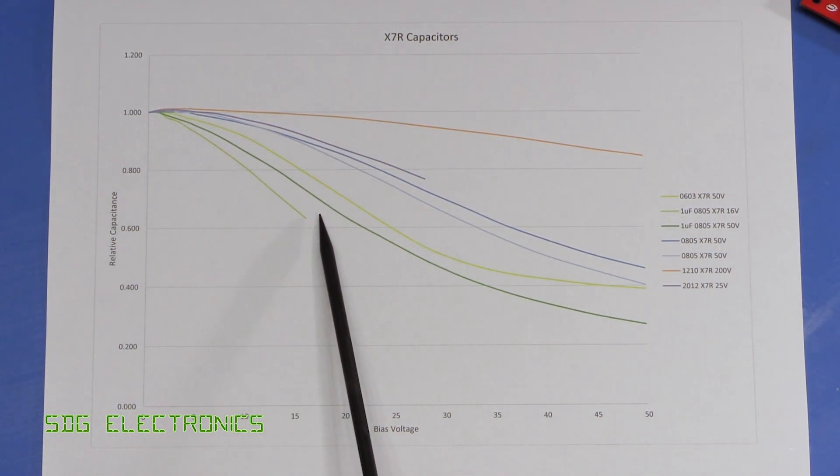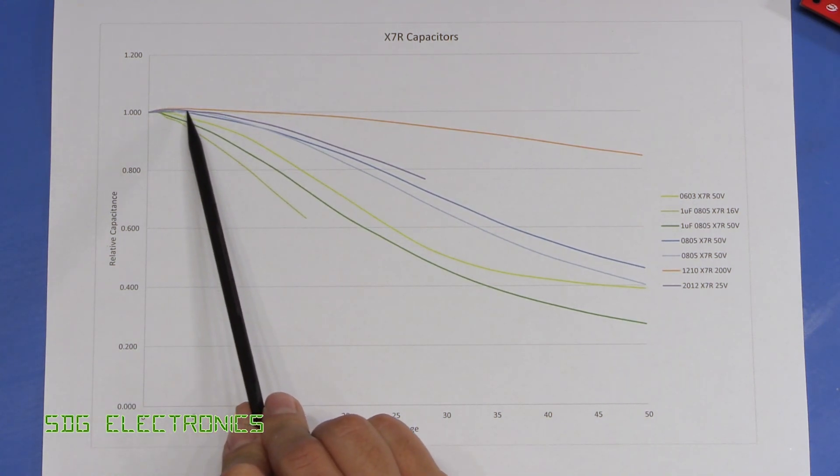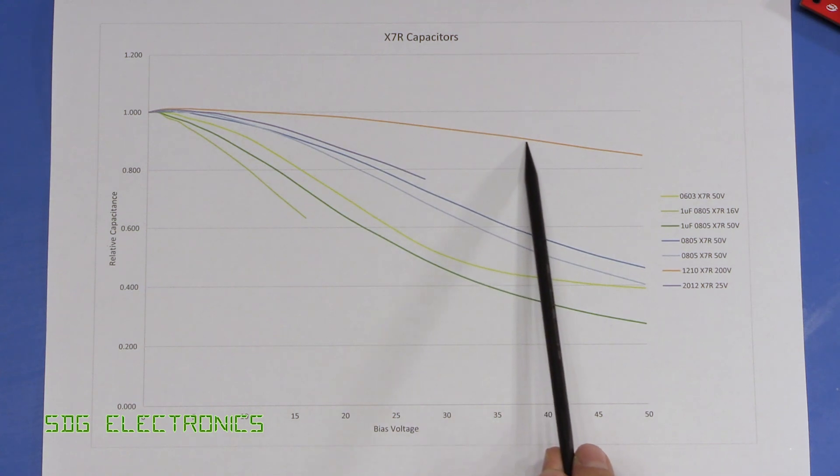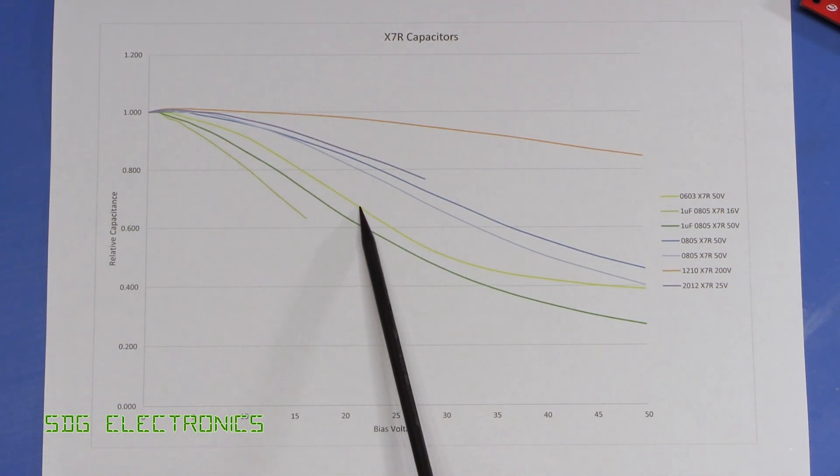And these both declined more rapidly than the lower capacitance capacitors. And also the lower working voltage capacitor declined more rapidly than the higher working voltage. And that's illustrated more prominently here by the 200 volt capacitor which is declining significantly slower than all of the others.